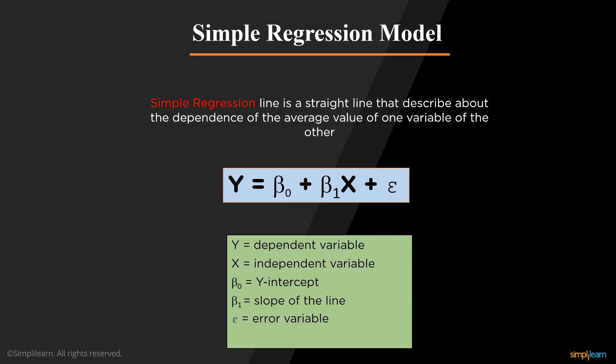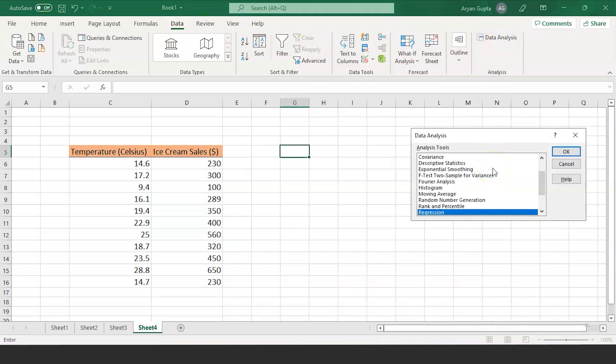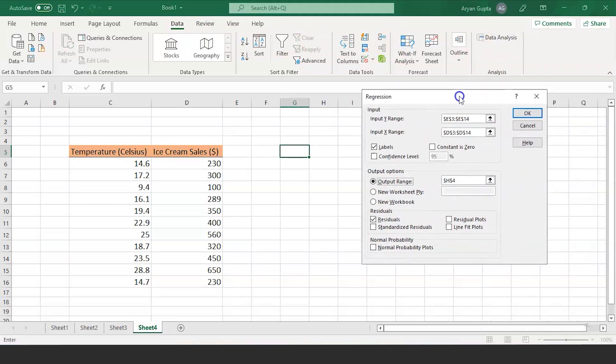Now let's move on to Excel to calculate the regression coefficient of a given data. We are on our Excel workbook. In front of us, we have the data of temperature of the day and sales of the ice cream on that day. Let's try to understand the regression analysis and summary output using this data. So, the first step is to go to the data tab and select data analysis, then select regression and click OK.